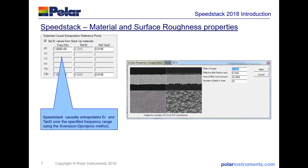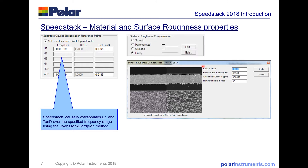SpeedStack needs to know comprehensive material information in order to predict the insertion loss. Here we're able to look at the frequency of interest, the reference dielectric constant, and the reference loss tangent. As we sweep the frequency, we causally extrapolate the dielectric constant and the loss tangent using the Svensson-Georgevich method. In this case, we're using Huray roughness modeling, which uses the ball radius of the surface of the copper, the area ball count, and number of balls in an area to accurately model the roughness effect on insertion loss over the frequency range.